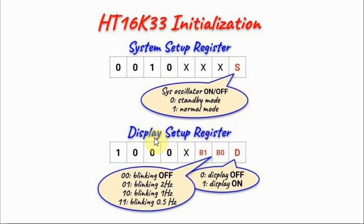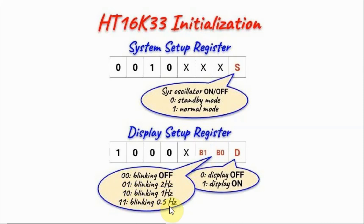We also need to program the display setup register to determine whether the display is on or off based on the least significant bit. Bits B0 and B1 determine blinking: zero-zero means blinking off, zero-one means blinking at 2 Hz, one-zero at 1 Hz, and one-one at 0.5 Hz.